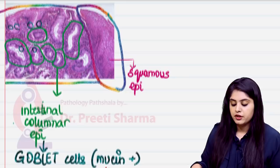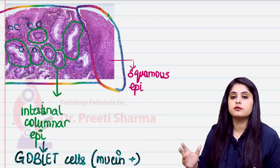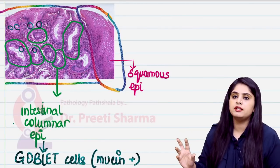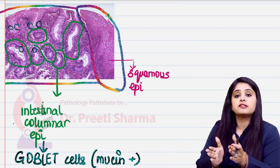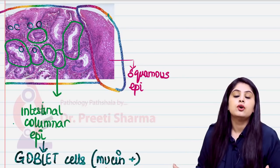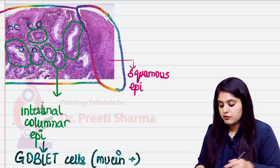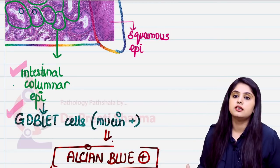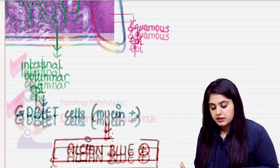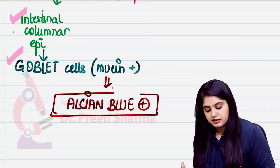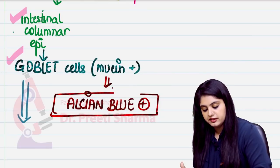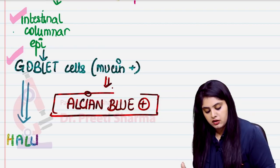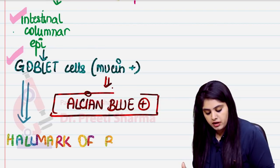Quick recap: Barrett's esophagus shows two different epithelial types on biopsy — normal squamous epithelium and a portion that has undergone metaplasia into intestinal columnar epithelium containing goblet cells. These goblet cells are considered the hallmark of Barrett's esophagus — that is the classic exam question.